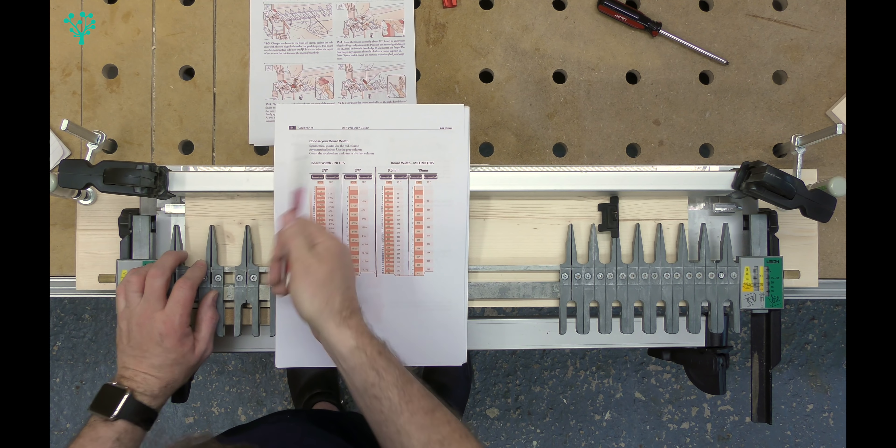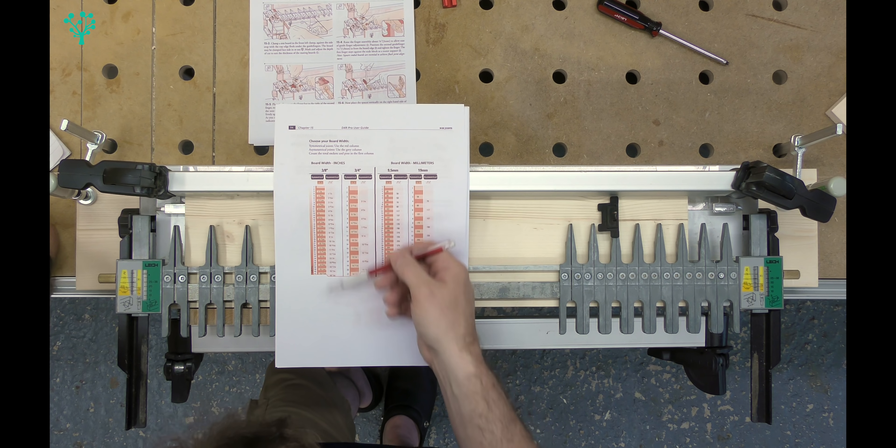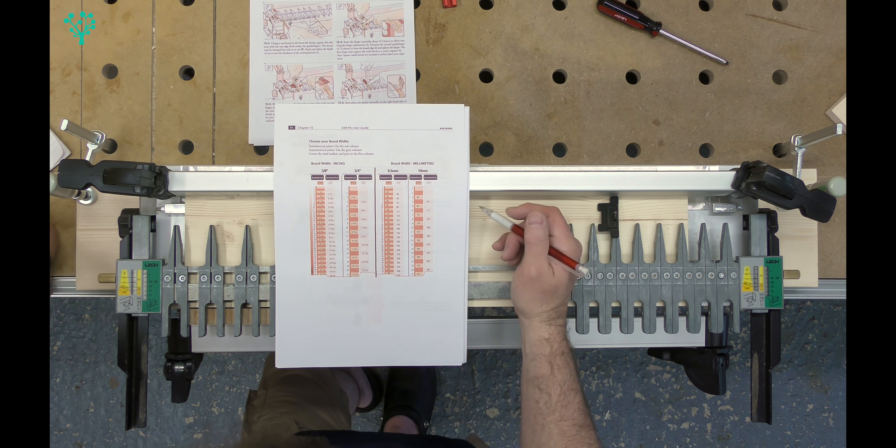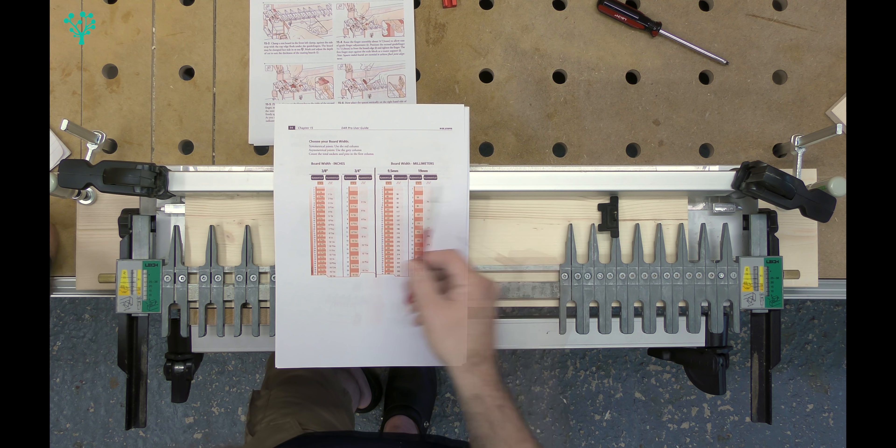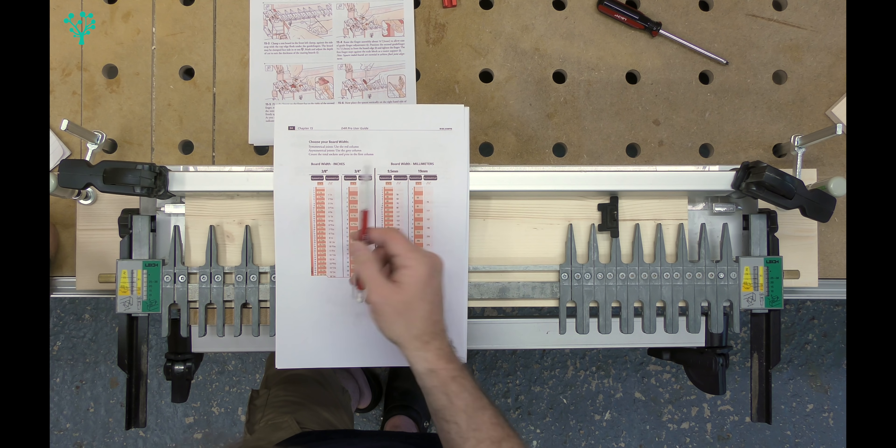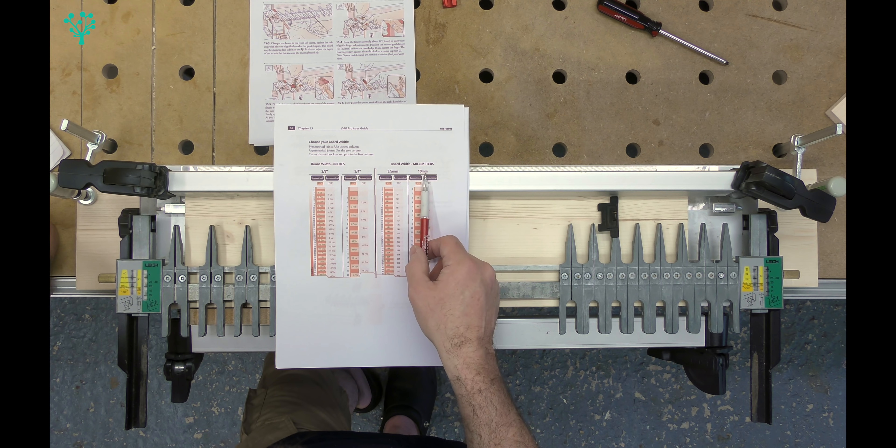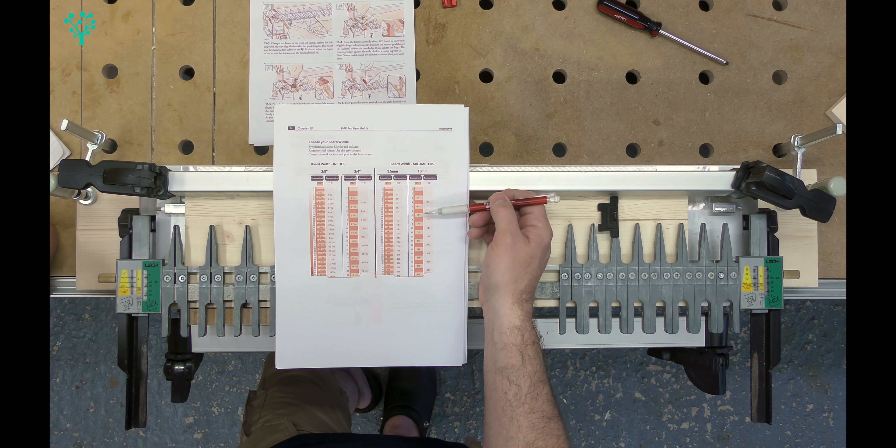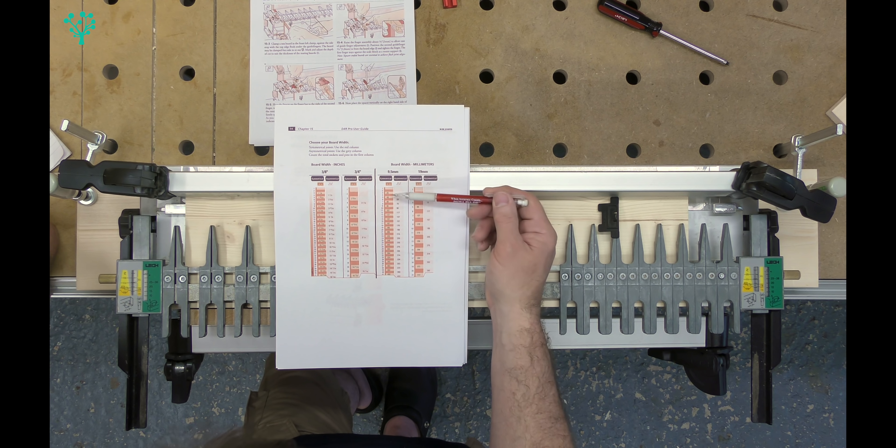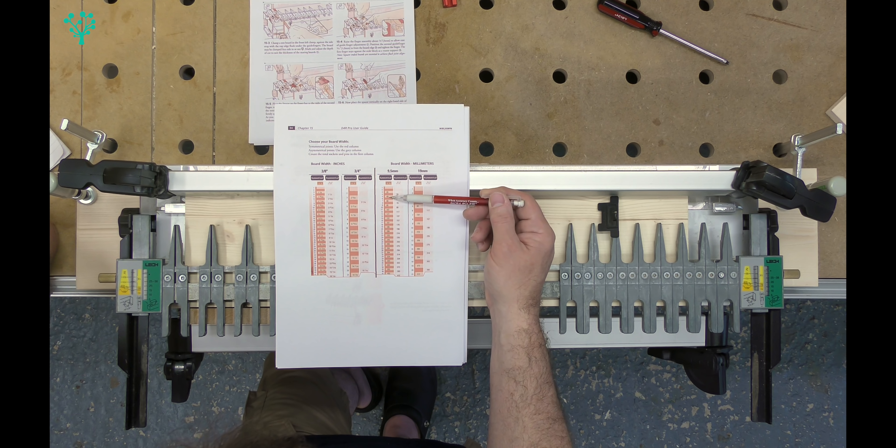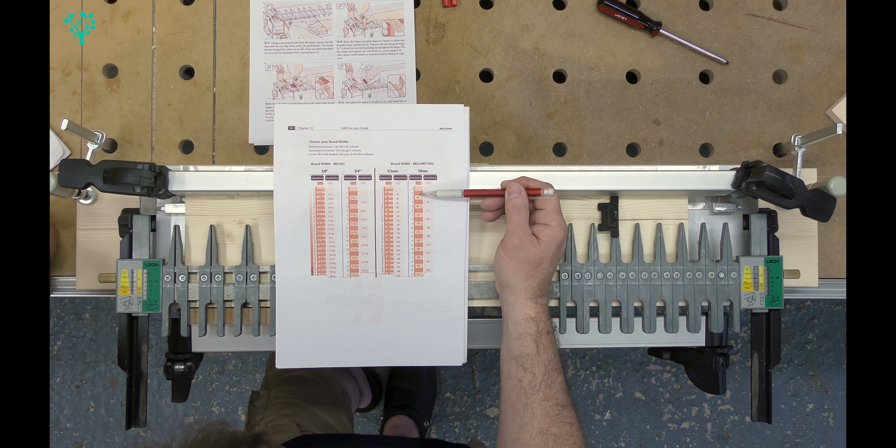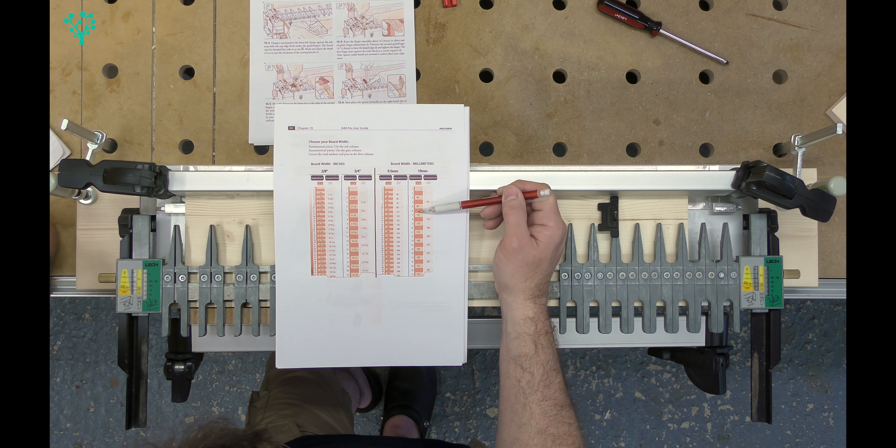If you look on page 54 of the user guide, you'll see these two tables. One table here is in inches and one table here is in millimeters. You'll also see there's a three-eighth inch and a three-quarter inch, or a 9.5 millimeter and a 19 millimeter. That's showing you the thickness of the finger joints you're going to make. In a 9.5 millimeter, each of your finger joints are going to be 9.5 millimeters in thickness. And on the 19 millimeter cut, each is going to be 19 millimeters in thickness.